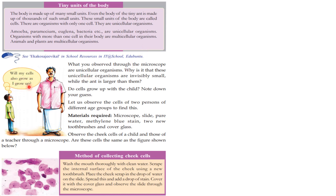Will my cells also grow as I grow up? What do you think about it? What you observe through the microscope are unicellular organisms. Why is it that these unicellular organisms are invisibly small while the ant is larger than them?